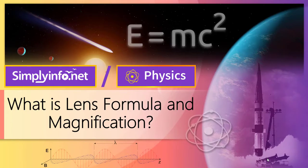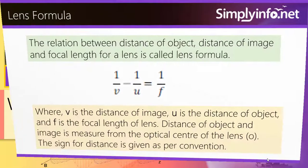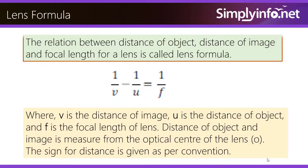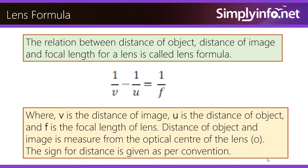What is Lens Formula and Magnification? Lens Formula: The relation between distance of object, distance of image and focal length for a lens is called lens formula. 1 by V minus 1 by U is equal to 1 by F, where V is the distance of image, U is the distance of object and F is the focal length of the lens.